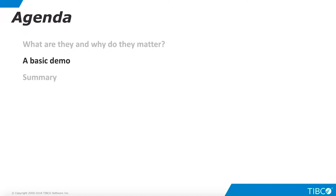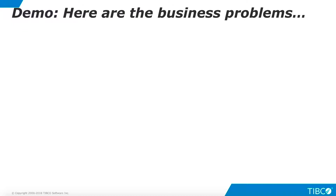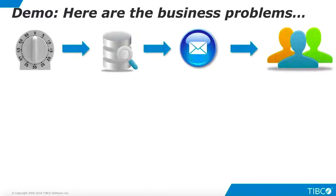Next, let's walk through a very basic demo of using triggers in TDV. Here are the business problems that we illustrate in this demo. In our first use case, system administrators want to be notified if a TDV cache is disabled. We use a timer-based trigger that executes a procedure which checks for disabled caches and emails the result.